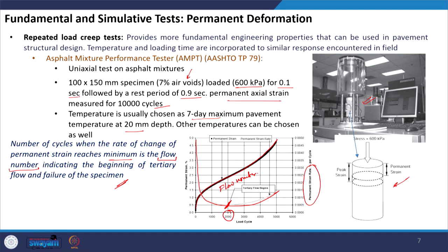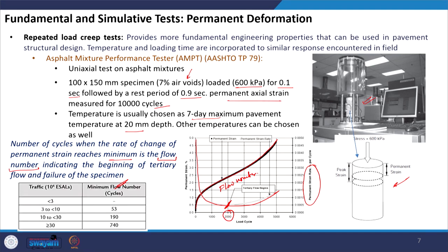The flow number is one of the parameters to quantify rutting resistance — it indicates the beginning of tertiary flow and failure of the specimen. Specification tables are available depending on traffic level; for example, for 3 to 10 MSA traffic the sample should have undergone at least 53 cycles before the start of tertiary flow. This can be used in performance-based design. Additionally, this particular curve can be very useful to quantify the total plastic strain or the magnitude of rutting in the mixture, which can be directly used as an input in pavement design.